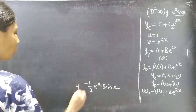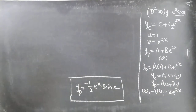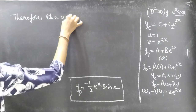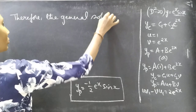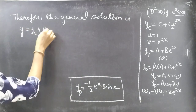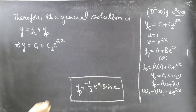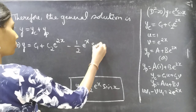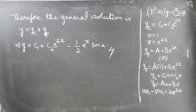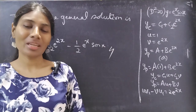Now we have both yp and yc, so let's write the general solution: y = yc + yp = c₁ + c₂e^(2x) - 1/2·eˣsinx. This is the required solution. We've solved the problem using variation of parameters. Hope you understood — see you in the next video, bye bye!